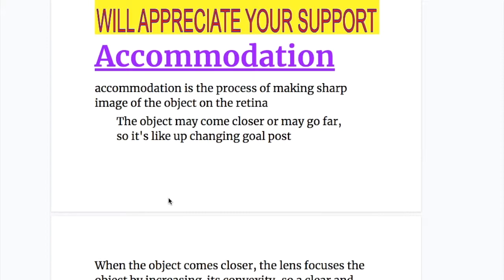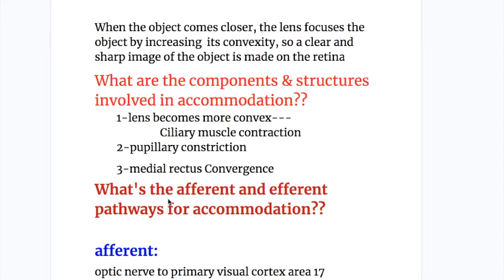Accommodation is the process of making a sharp image of an object on the retina. The object may come closer or go far — it's like changing a goal post. When the object comes closer, the lens focuses the object by increasing its convexity, so a clear and sharp image is made on the retina.